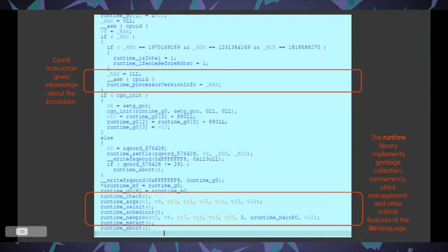The first interesting function is runtime.args, used to analyze arguments passed to the main function — argc and argv are stored into variables. Next is runtime.newproc, which initializes a new Go routine; in this case it's preparing for the main routine, which is the first Go routine that runs. Then we have runtime.mstart, which starts the main routine — it's inside this function that the actual main routine, our main.main, gets executed.